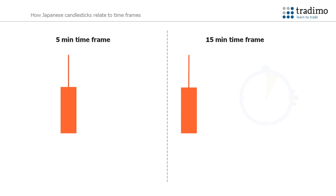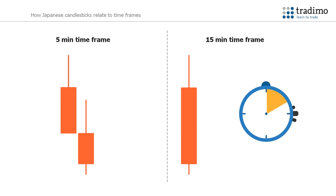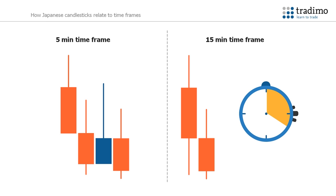A 15-minute candle shows the price action during a 15-minute period. So after 10 minutes you would have two 5-minute candles but just one 15-minute candle. At 15 minutes you have three 5-minute candles and still just one 15-minute candle. After 20 minutes there are four 5-minute candles and two 15-minute candles.